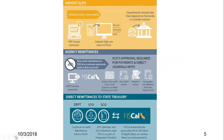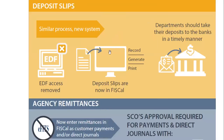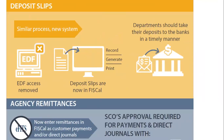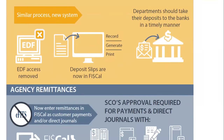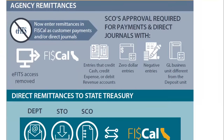Just a quick review of some of the changes — we released an infographic earlier this year. The big things to remember: STO deposit slips are now in FISCAL. If you previously sent manual deposit slips to STO, you should be doing that yourself now. If you have field offices, they should be sent into department HQ for your department to manually enter those into FISCAL. If you use EDF today, the same people who use EDF today will be using FISCAL tomorrow, as EDF will be going away. Departments should take their deposits to the banks in a timely manner. Then we go into agency remittances — your TT-47 remittances — which will now be done in FISCAL.